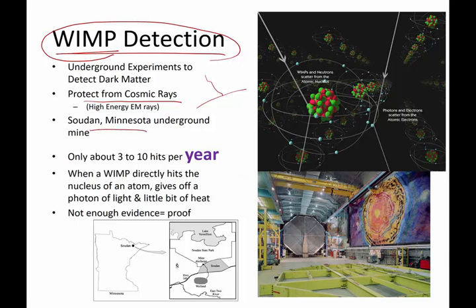In Sudan, Minnesota, there is an old abandoned mine — it's the Iron Range of Minnesota. Deep in these mines they have placed an experiment actually looking for WIMPs. If one of these WIMPs comes in, it would break an atomic nucleus and emit a very particular collection of subatomic particles scattered all over the place. The challenge is these WIMPs are very difficult to detect — they only get 3 to 10 hits per year that are possible real-life WIMP hits.